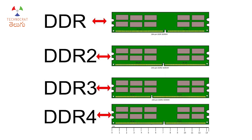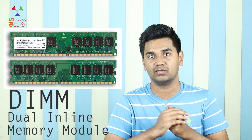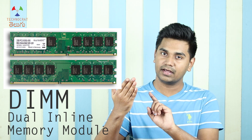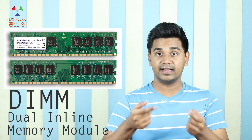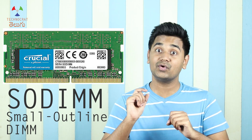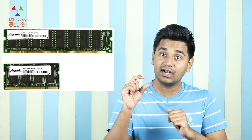Physically, RAM modules differ in form factor and number of pins. In desktop computers, DIMM modules are used — DIMM stands for Dual Inline Memory Module, meaning pins are on both the front and back sides. In laptops, SODIMM modules are used — SODIMM stands for Small Outline Dual Inline Memory Module. SODIMMs are physically smaller than DIMMs, making them suitable for compact laptops.